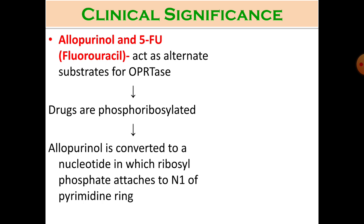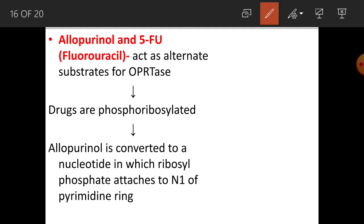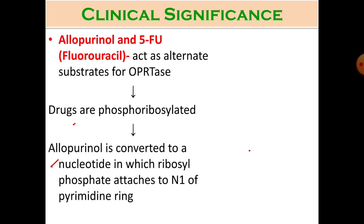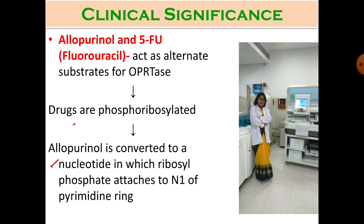Clinically, the mechanism of action of allopurinol and 5-fluorouracil is relevant — both act as alternate substrates for OPRT (orotate phosphoribosyltransferase). Allopurinol is converted to a nucleotide in which ribosyl phosphate attaches to N1 of the pyrimidine ring, thereby regulating pyrimidine synthesis.